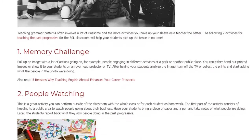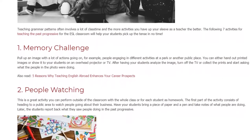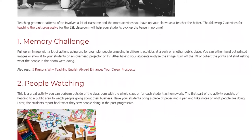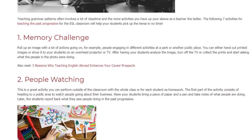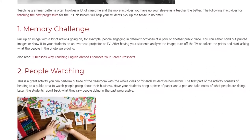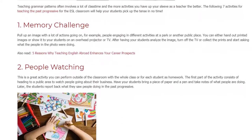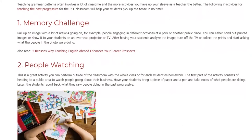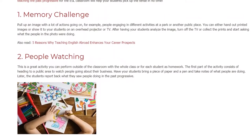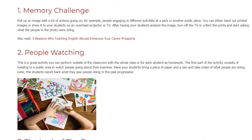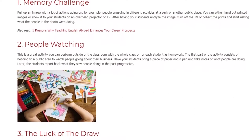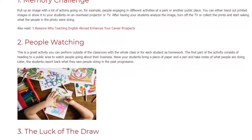Activity 2: People Watching. This is a great activity you can perform outside of the classroom with the whole class or for each student as homework. The first part of the activity consists of heading to a public area to watch people going about their business. Have your students bring a piece of paper and a pen and take notes of what people are doing. Later, the students report back what they saw using the past progressive.